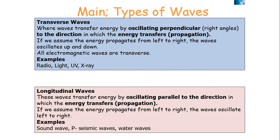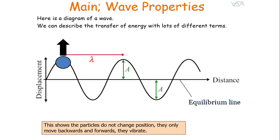Longitudinal waves are waves that transfer energy by oscillating parallel to the direction in which the energy transfers — via propagation. So if the energy propagates from left to right, the waves oscillate from left to right. Examples of longitudinal waves include sound waves, P-seismic waves, and some examples of water waves. We can look at the properties of a wave by examining the different characteristics of a wave.